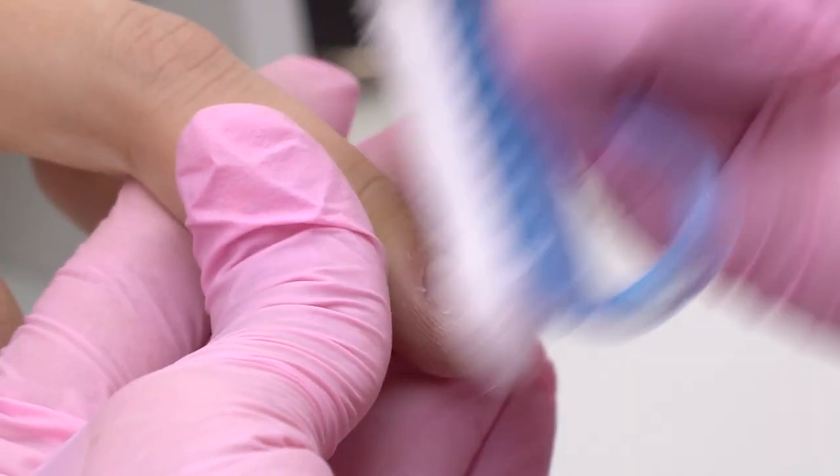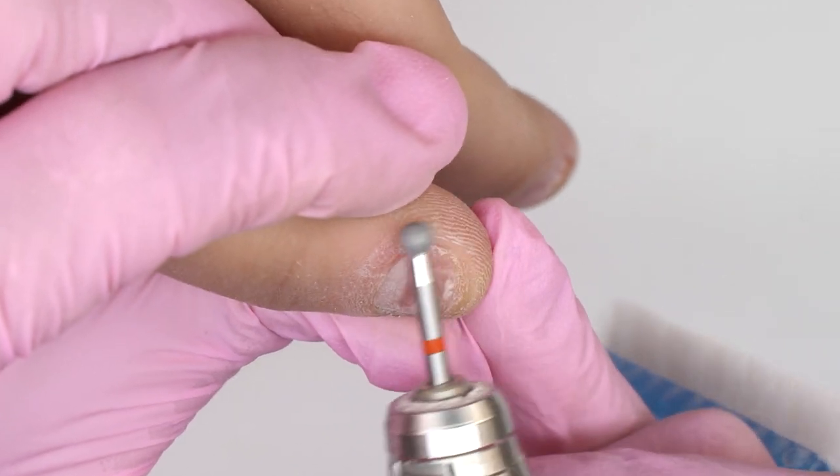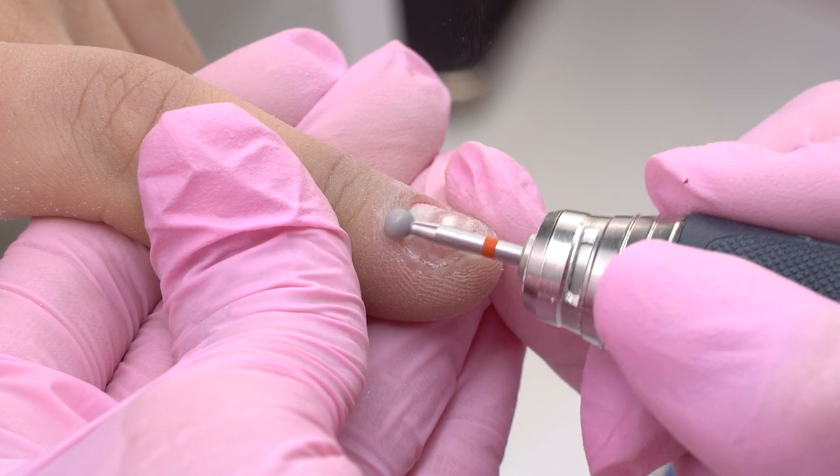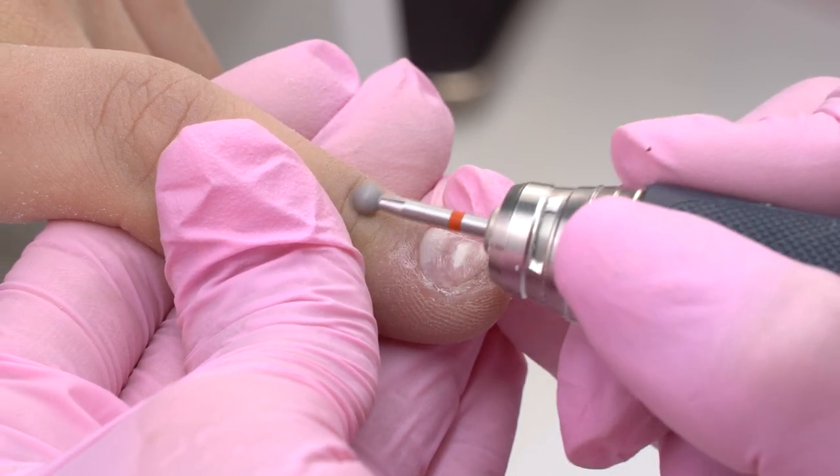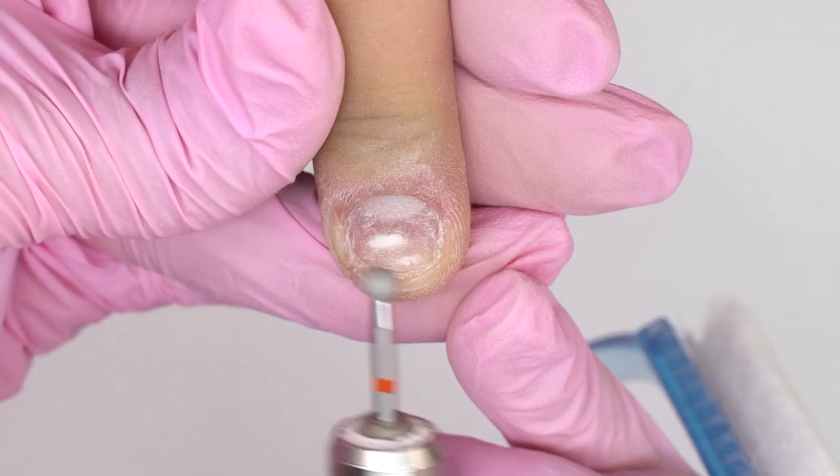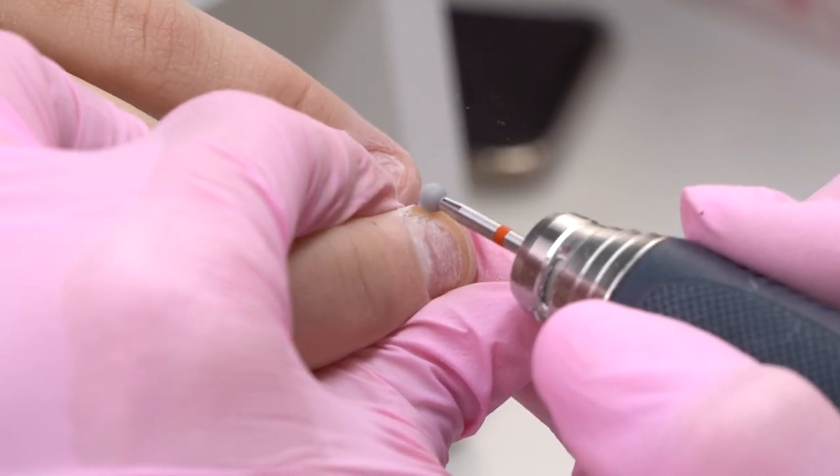We can polish all the tiny hangnails with a diamond drill bit, a sphere or a rounded cone one, the one you're comfortable working with. Don't process one area for too long to make sure that it doesn't burn, cause any discomfort, and the manicure procedure is as safe and comfortable as possible.